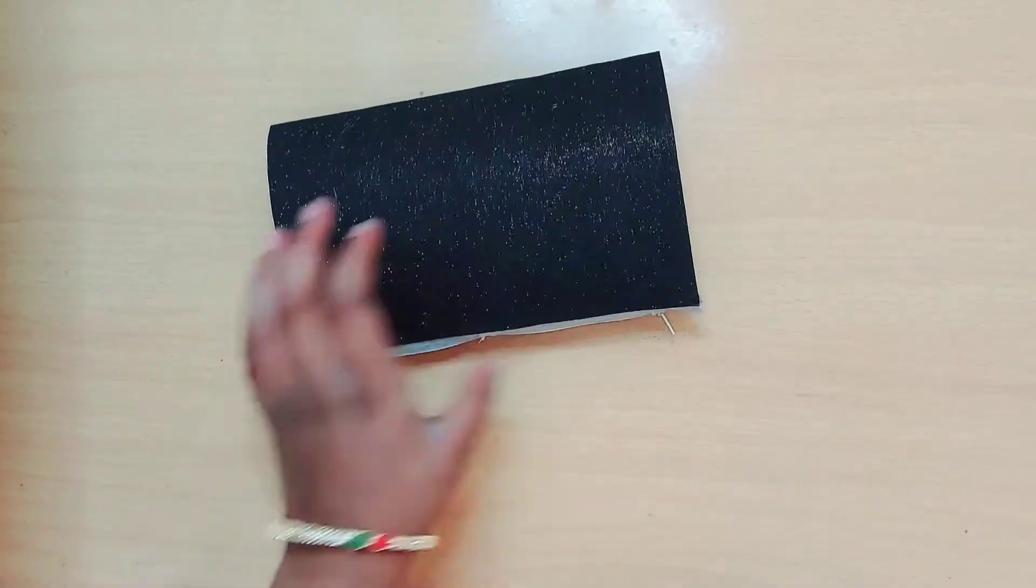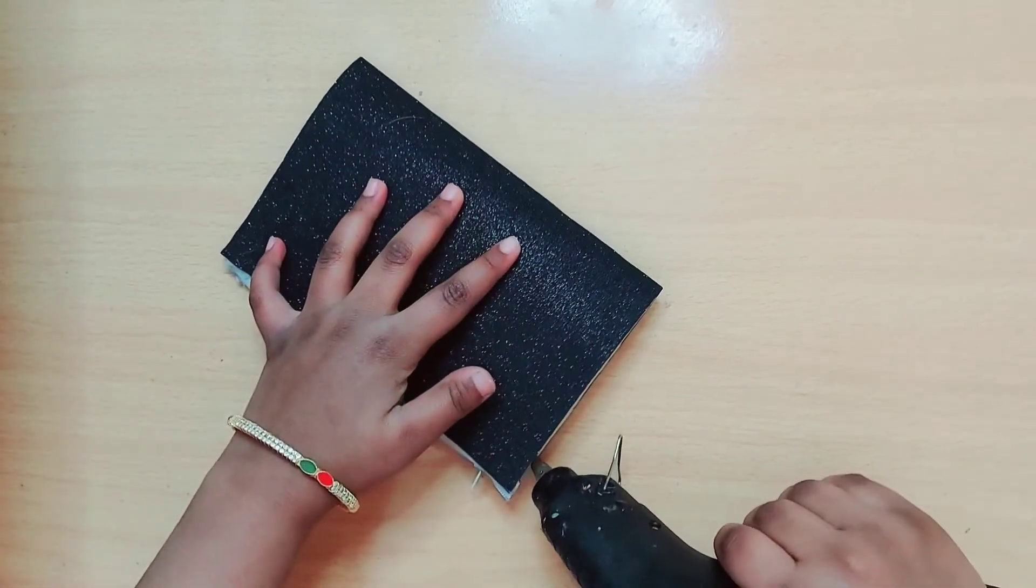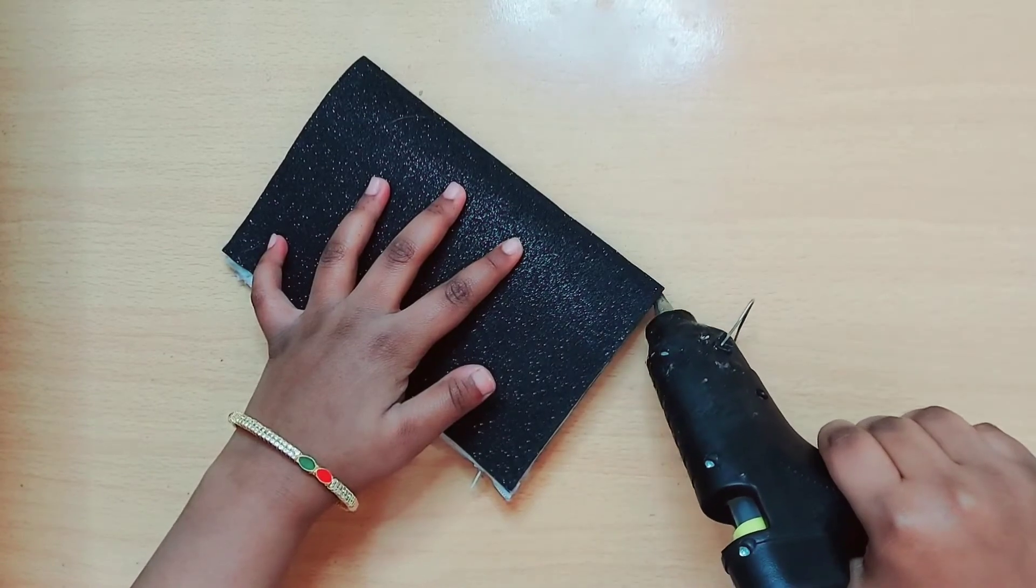After sticking the zip, stick the two sides which are open with a glue gun or using any type of glue.